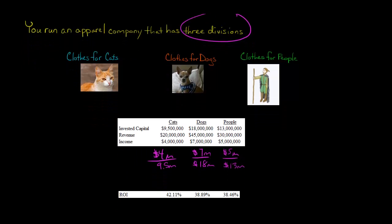So if you calculate those out, you get an ROI as follows for each division. For the cats, it's actually the highest. It's 42.11%. It's 38.89% for the dogs and 38.46% for the people. Now notice something. I want to call attention to this. The division that had the highest profit was actually the dog division. They had the highest income.